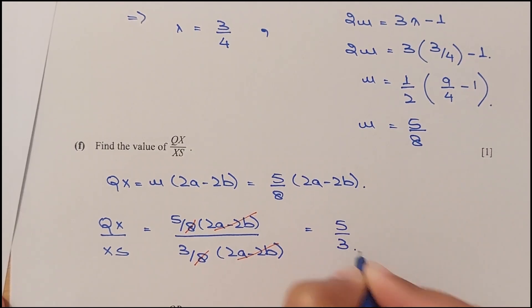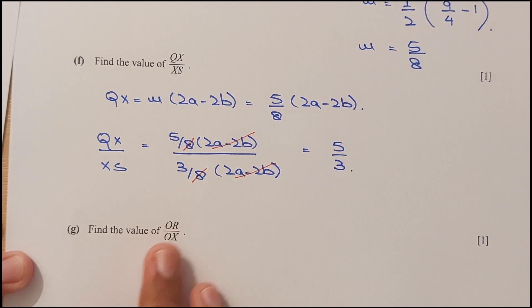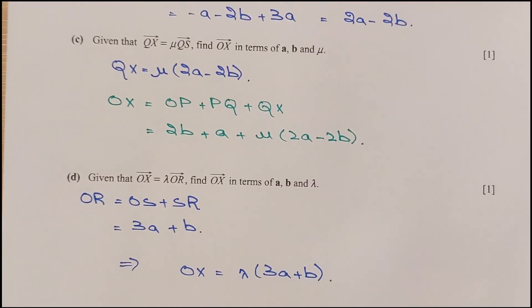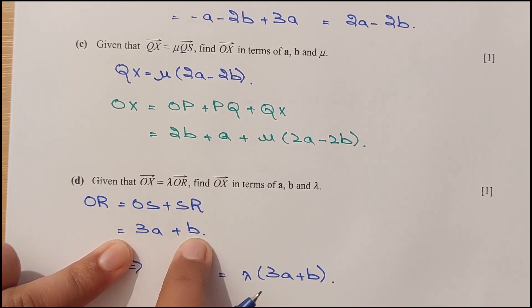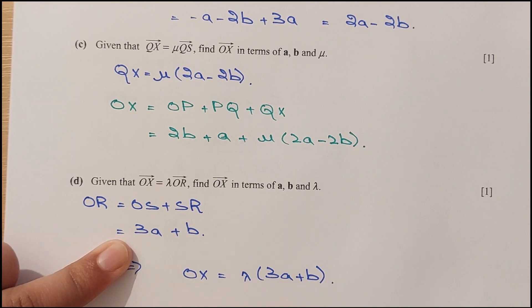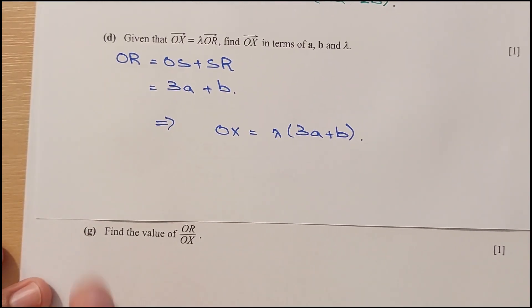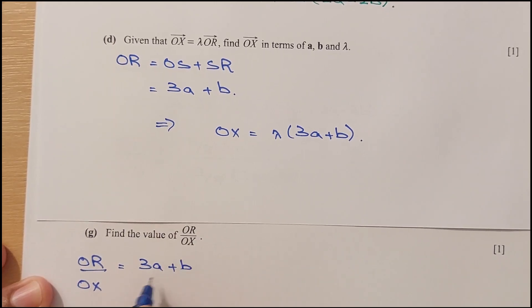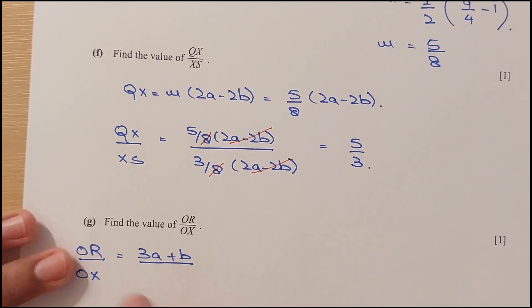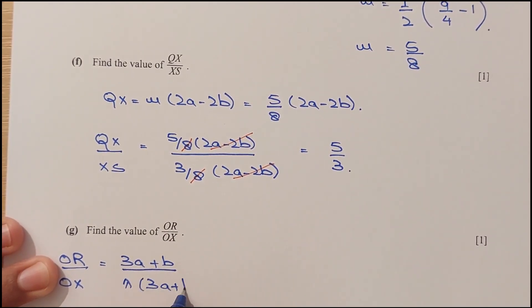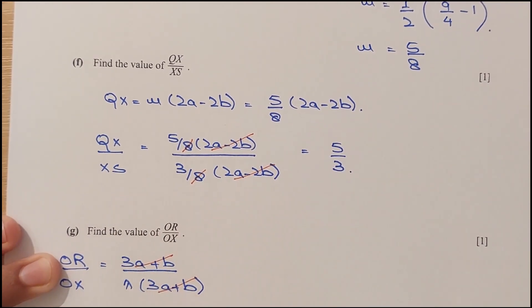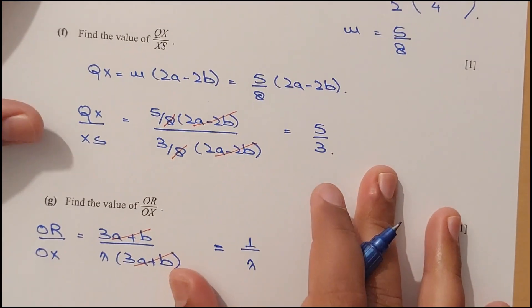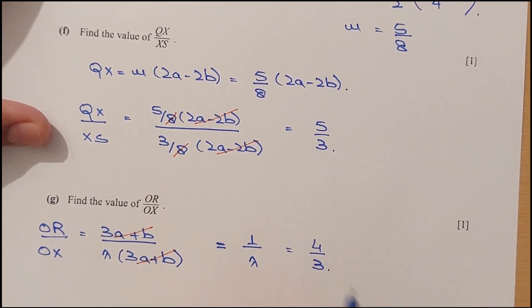For Part F: find QX over XS. Since QX equals mu times QS, QX corresponds to 5 over 8 of the total, and XS corresponds to 3 over 8. The ratio QX to XS equals (5 over 8) divided by (3 over 8) equals 5 over 3. For Part G: find OR over OX. Since OX equals lambda times OR, OR over OX equals 1 over lambda equals 1 over (3 over 4) equals 4 over 3.